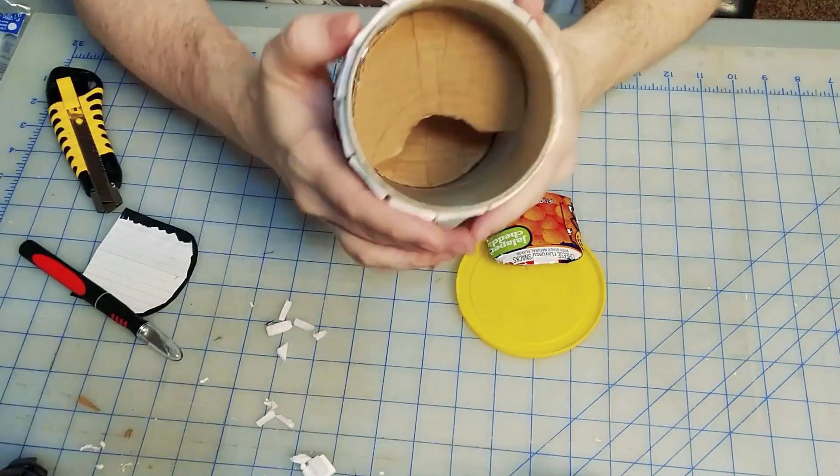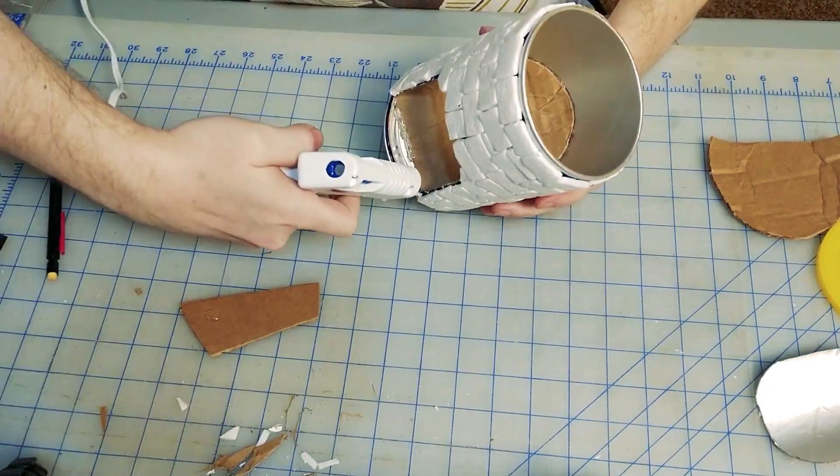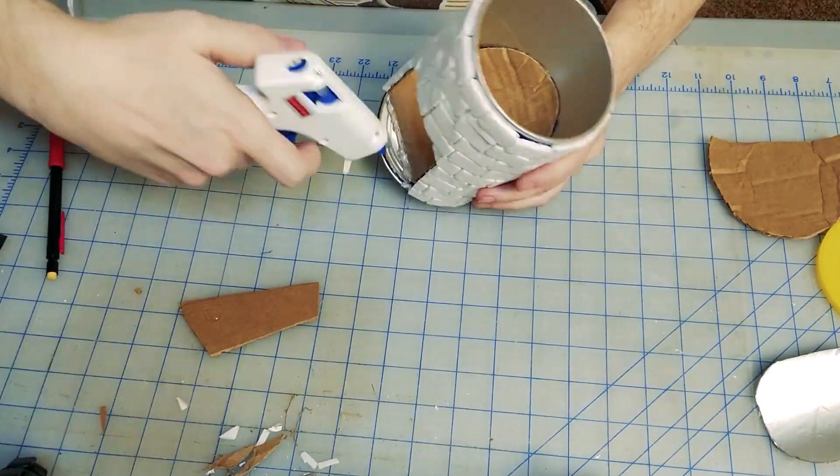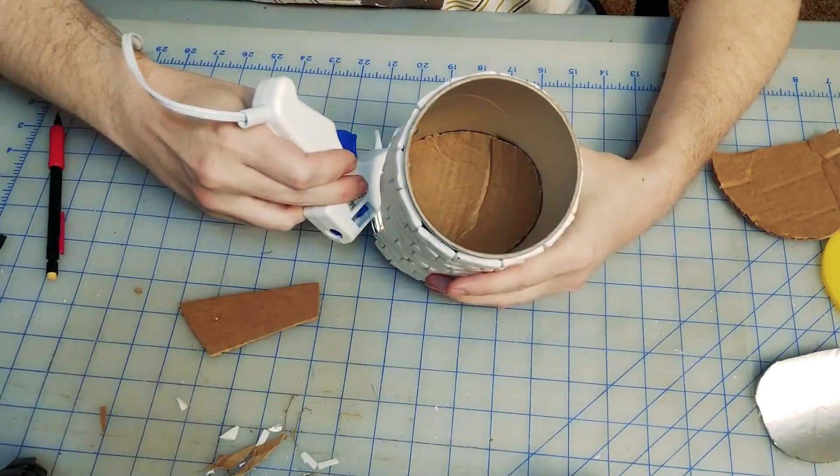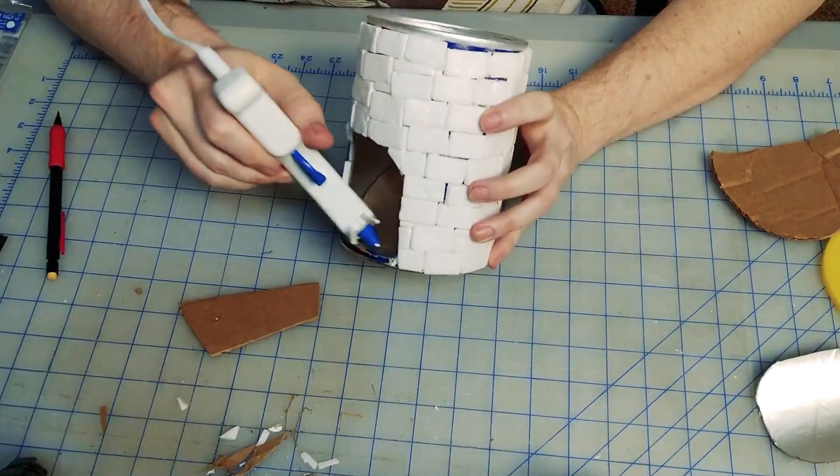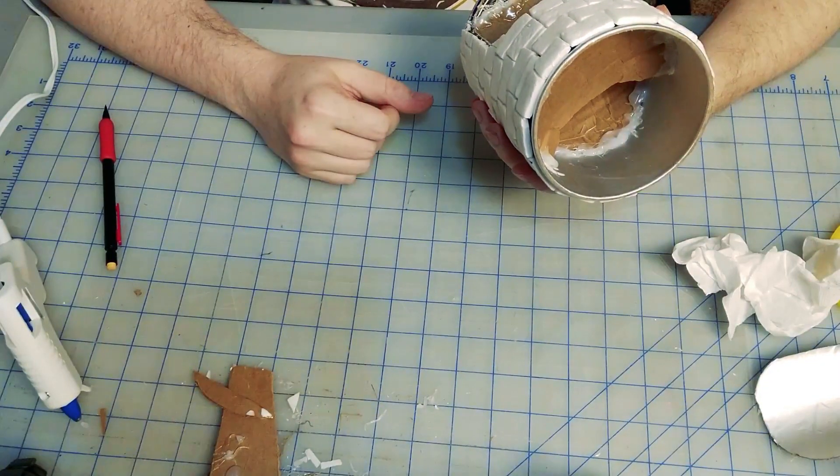Now we're going to be gluing in the cardboard bounce part. I'm using the edge of the glue gun to kind of even out the glue, and here we are glued in all of the internal structure.